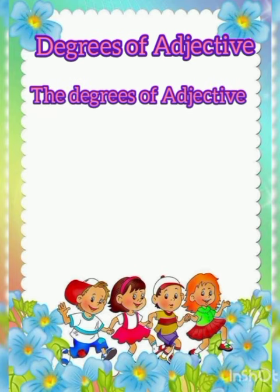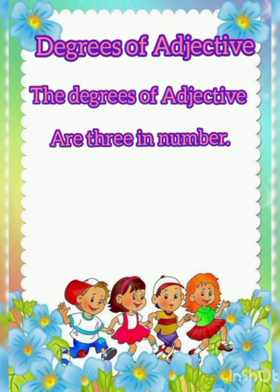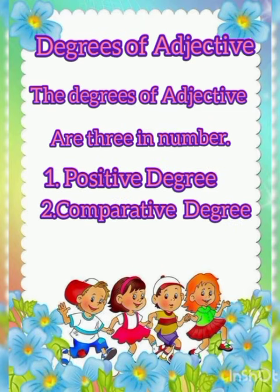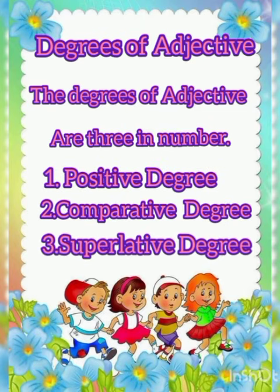The degrees of adjectives are three in number. The first one is positive degree, the second is comparative degree, and the third is superlative degree.